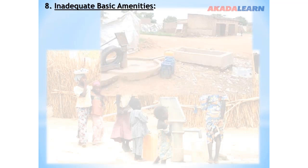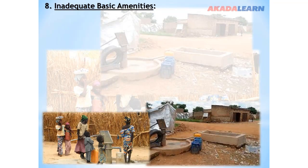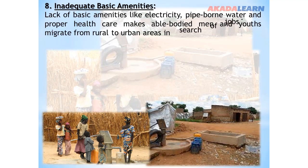Problem number eight: Inadequate basic amenities. Lack of basic amenities like electricity, pipe water, and proper healthcare makes able-bodied men and youth migrate from rural to urban areas in search of jobs.